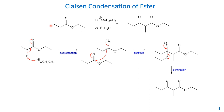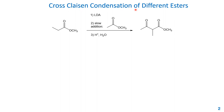The first example we looked at is more like a self-condensation of the ester. If we use different esters, that is called cross-Claisen condensation. In this example, we have methyl propanoate and methyl acetate. To reduce side reactions, we use LDA to generate the enolate first, then slowly add the other ester. We add it slowly because we want to minimize the self-condensation of this ester. The third step requires an acid workup.